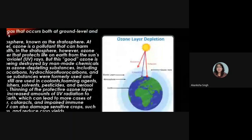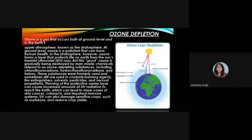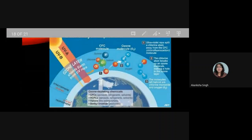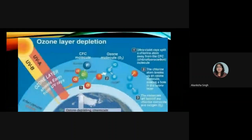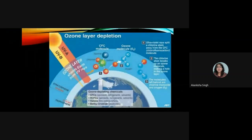A diagram shows the ozone hole through which sunlight reaches directly to the earth. This protective layer is depleted due to air pollution. CFCs are generated from air conditioning refrigerants, solvents, and HCFCs aerosol refrigerant solvents; halons are produced by fire extinguishers; and methyl bromide is another ozone depleting chemical produced by pesticides.